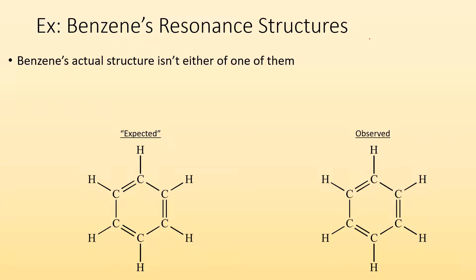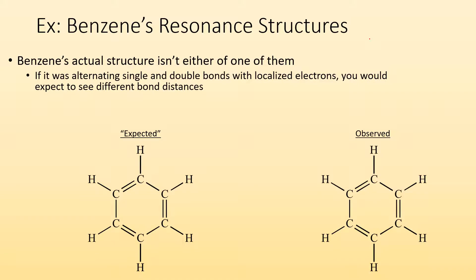Benzene's actual structure isn't going to be one or the other, right? If it really was alternating single and double bonds with localized electrons, you would expect to see different bond distances. For example, the double bonds could be 1.34 angstroms, whereas the single bonds are going to be longer, 1.54 angstroms.